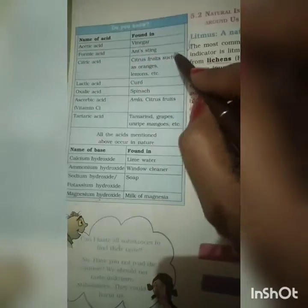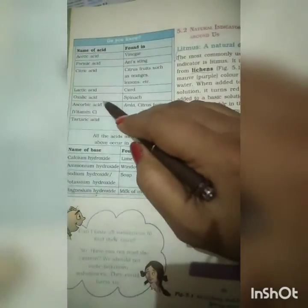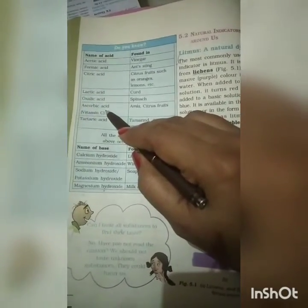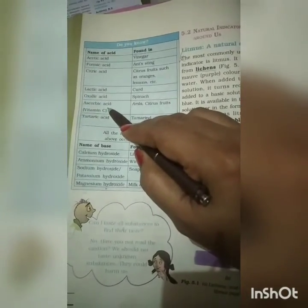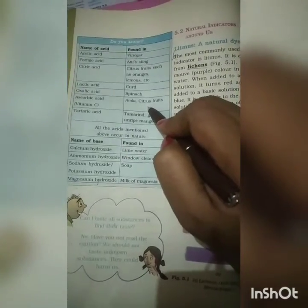Here are some examples given in this table. You can see acetic acid found in vinegar, formic acid found in ants, citric acid found in citrus foods such as orange, lemon, etc. Lactic acid found in curd, oxalic acid found in spinach, ascorbic acid — the source of vitamin C — found in amla and citrus food.